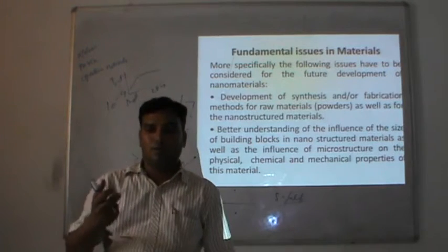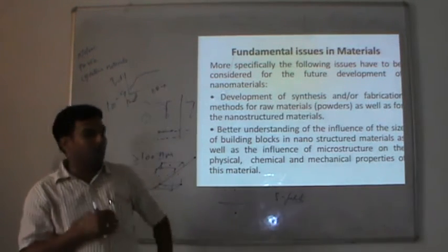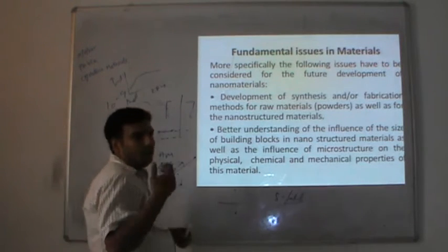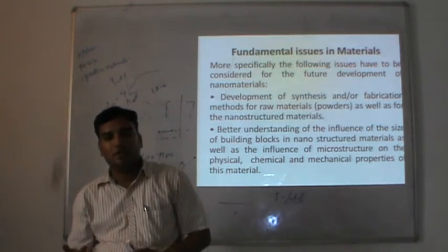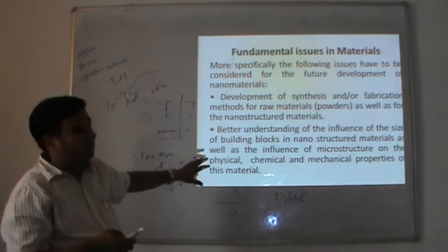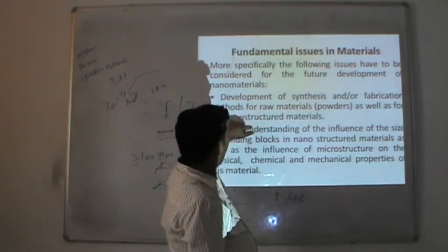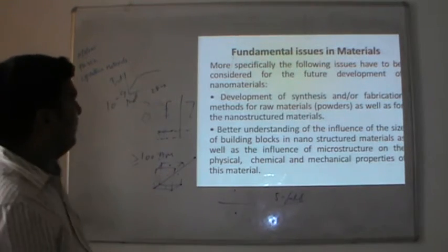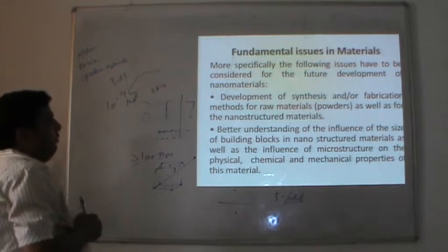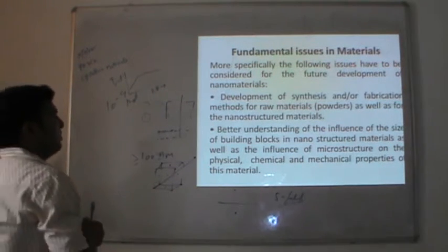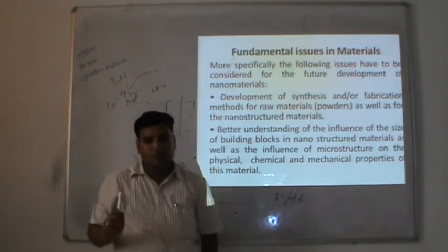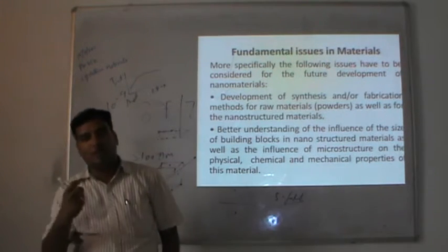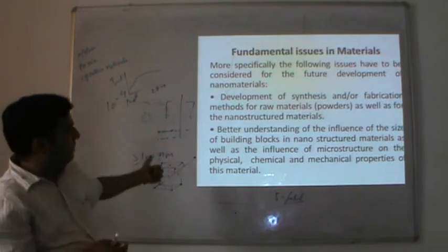When I prepare a nanostructure, how do I develop a synthesis process or fabrication method for a particular type of material? I say I get the chemical raw materials from the market and prepare the nanosize of, say, cobalt or zinc oxide. How can I make sure that the material I am getting from the market is pure enough to get the desired composition? These two stages — preparation of raw material and then fabrication of nanostructured material — are important.